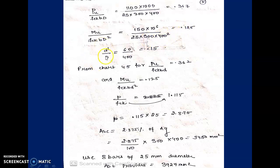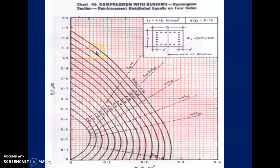The chart for d'/D = 0.15, fy = 415, with reinforcement distributed on all four sides is selected from SP16. For fy = 500 with the same d'/D ratio, you would go to a different chart. We will use the chart for four-sided distribution. There are also charts for two-sided distribution, but we prefer four-sided.